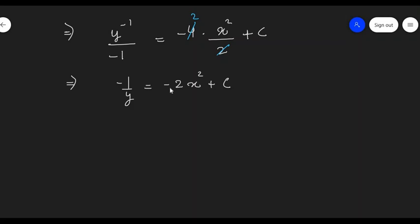Let's cancel this minus and convert y to positive. So, we will get 1/y = 2x^2 - C, and finally I can write y = 1/(2x^2 - C).